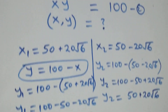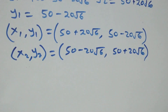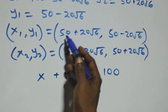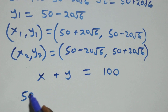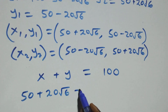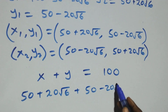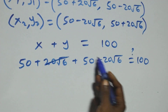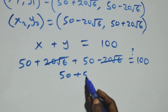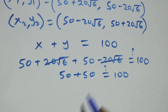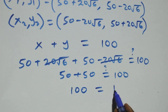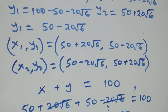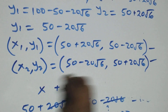Let's check if these satisfy the two given equations. From equation one, x plus y equals to 100. Substituting the first solution: (50 plus 20 root 6) plus (50 minus 20 root 6) equals 100. The 20 root 6 terms cancel, and 50 plus 50 gives us 100, which equals 100. The left hand side equals the right hand side, so these solutions satisfy the first equation.